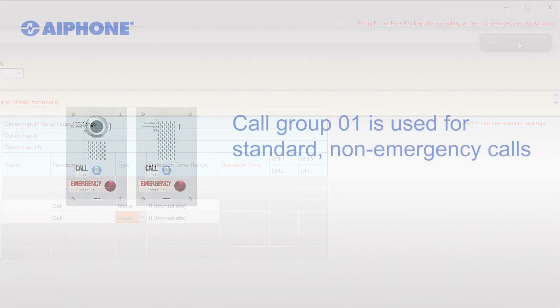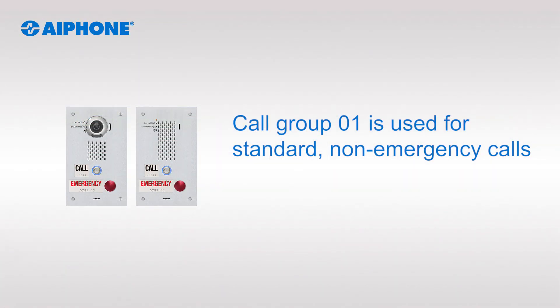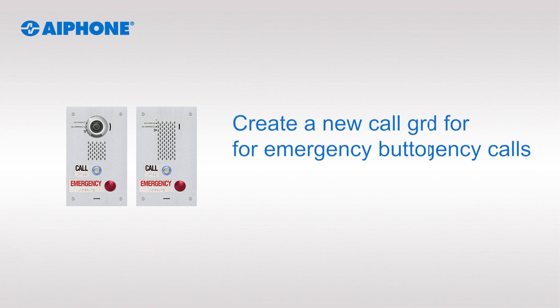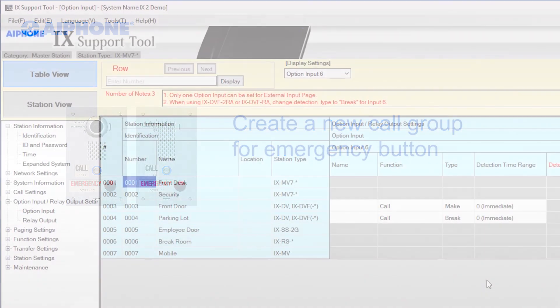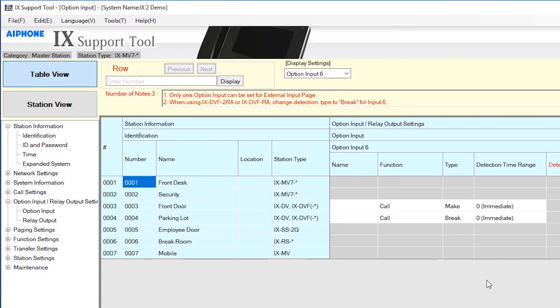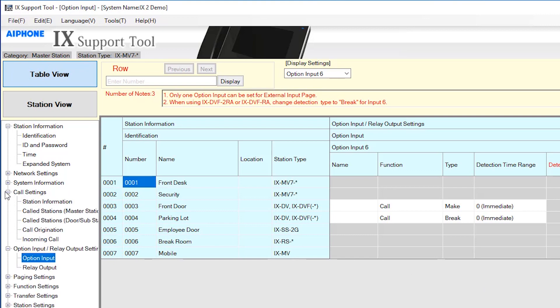The emergency button will default to Call Group 01. This is the same group that is assigned to the call button of non-emergency stations and to the standard call button on emergency stations that have two call buttons. In order to have the emergency button call different masters than that of the standard call button, a new call group will need to be created. From the menu on the left, expand Call Settings and select Called Stations, Door/Substations.